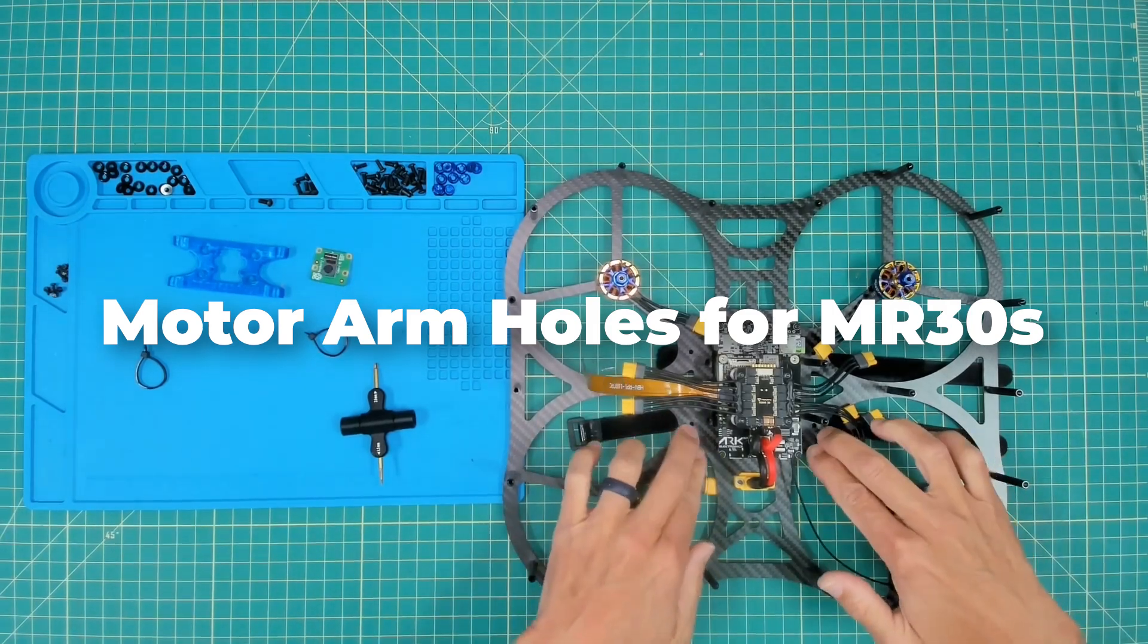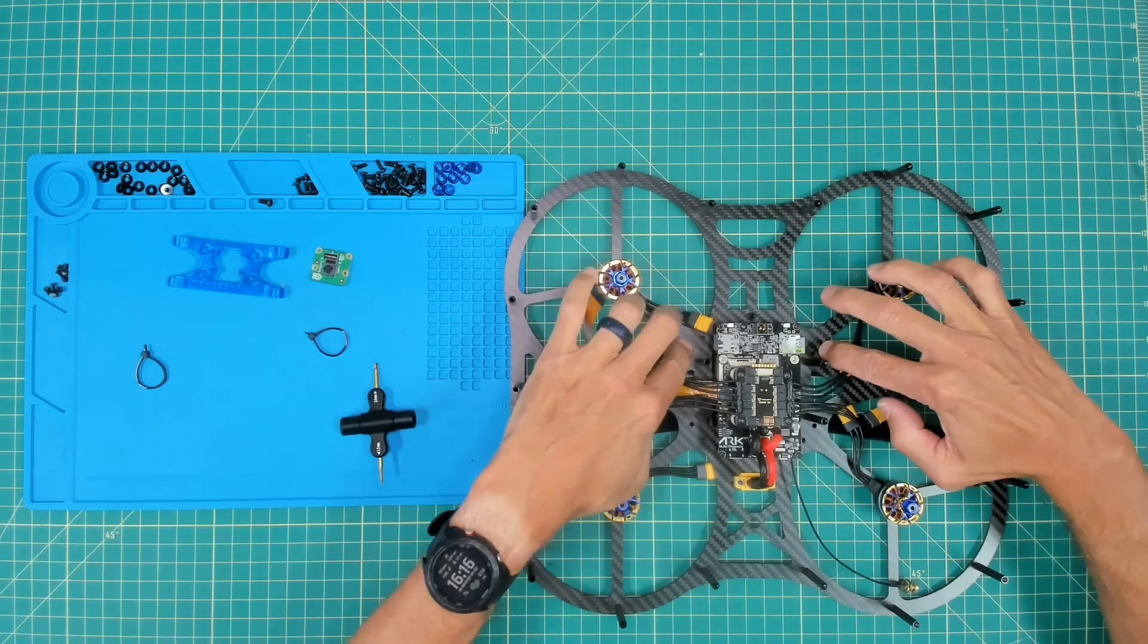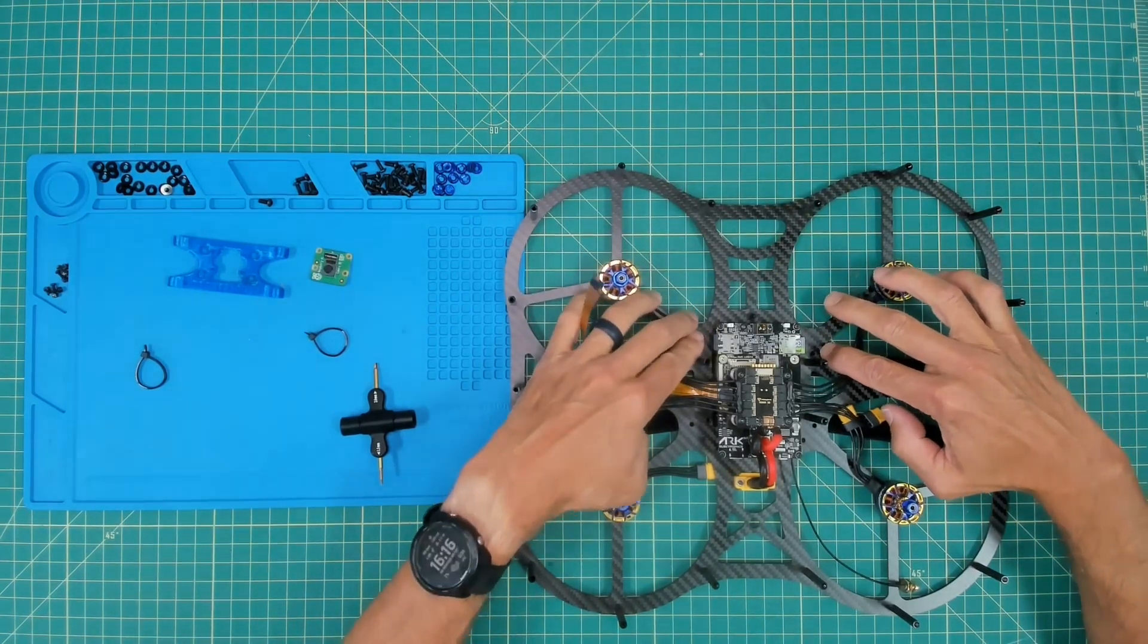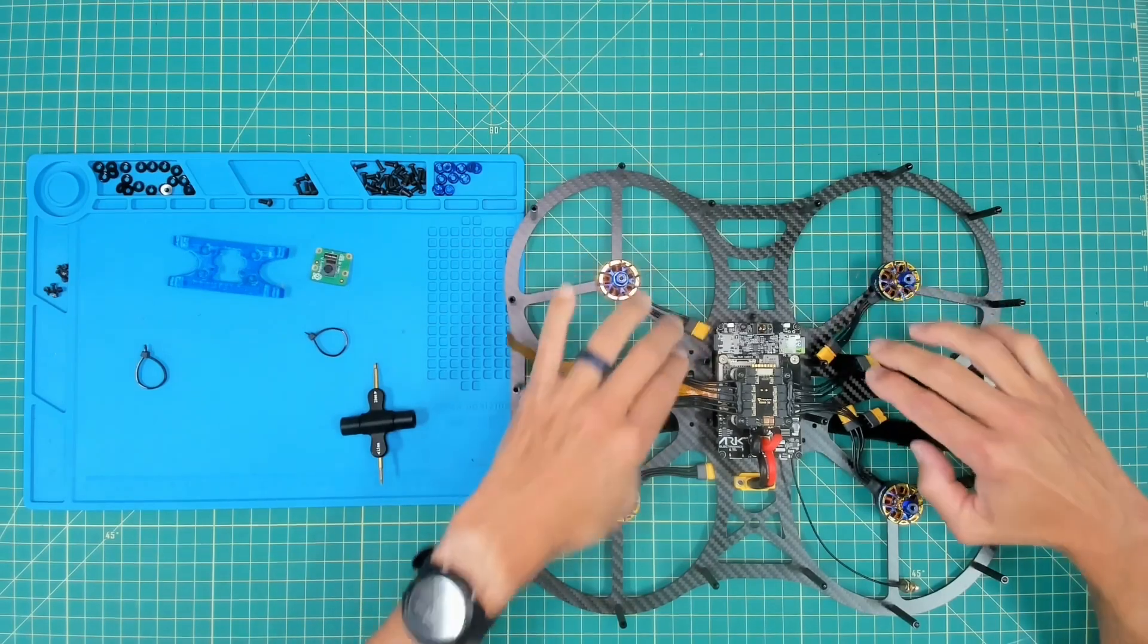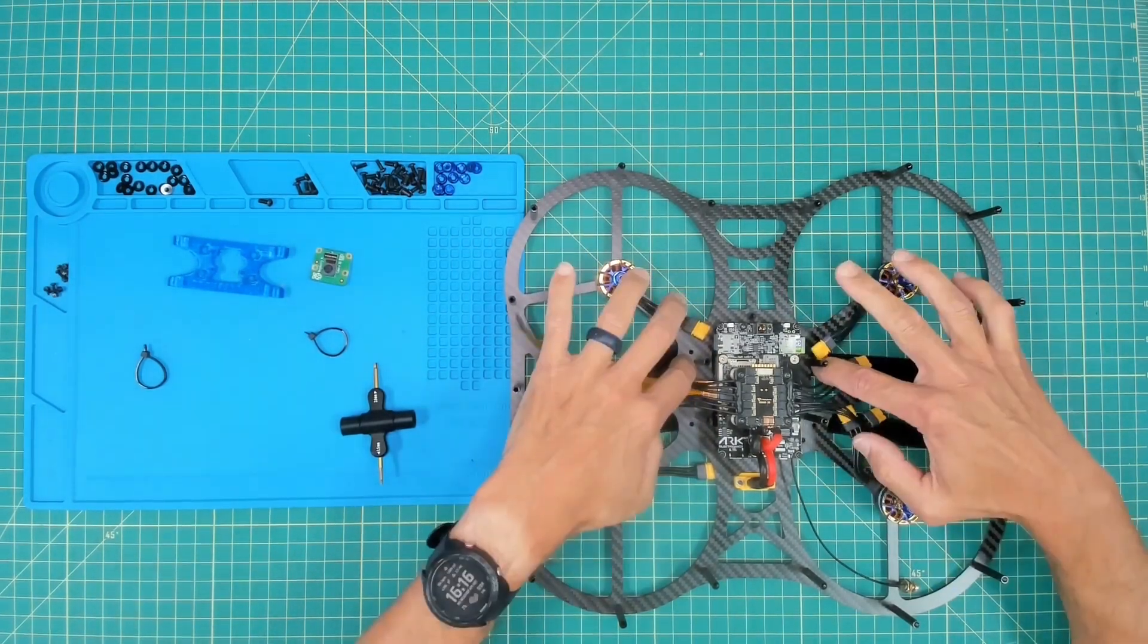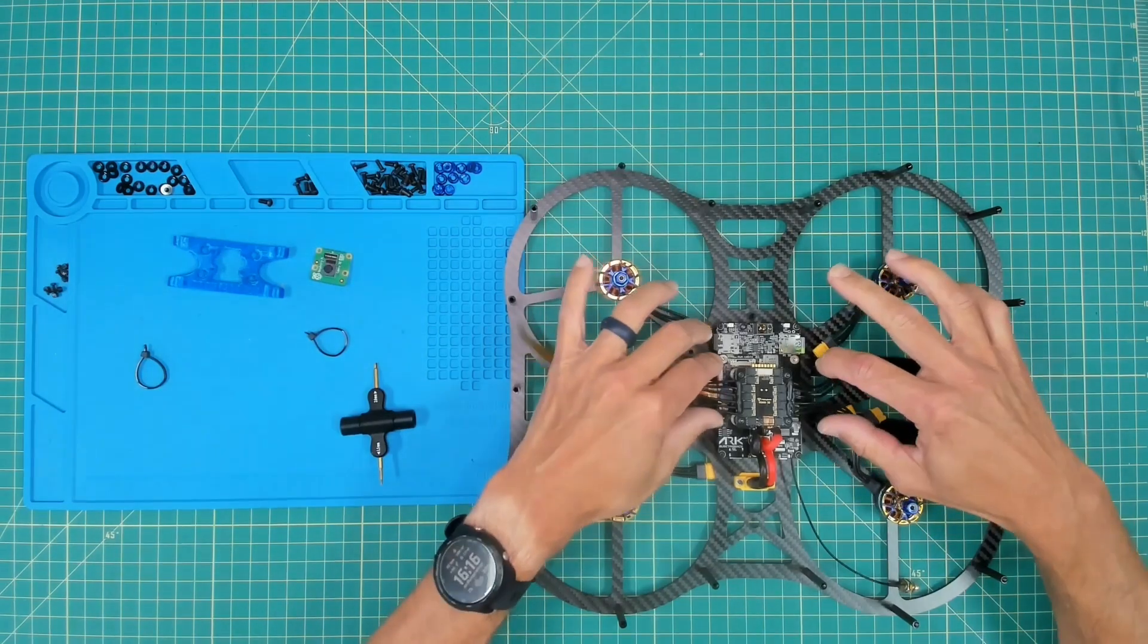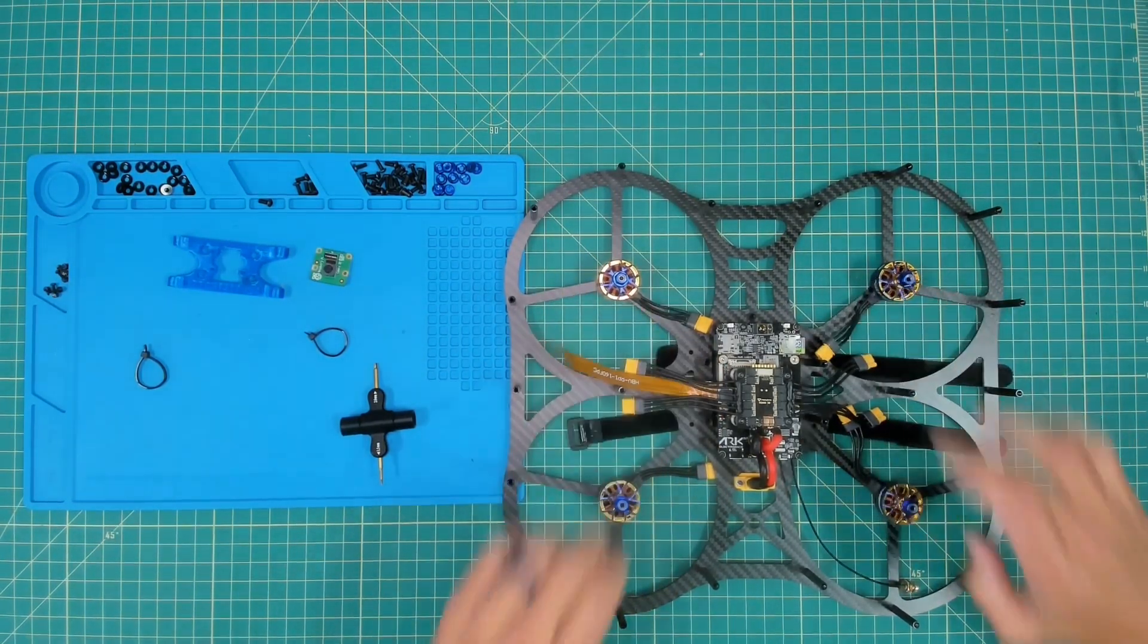Let me make one callout. As you're doing this assembly, you'll notice that there are two holes on each motor arm. Those holes represent where we'll put zip ties to connect these MR30s and secure them. Make sure that you pay attention when you install these four standoffs. You want to install them in the proper standoff holes and then leave each of these two holes available for our zip ties.